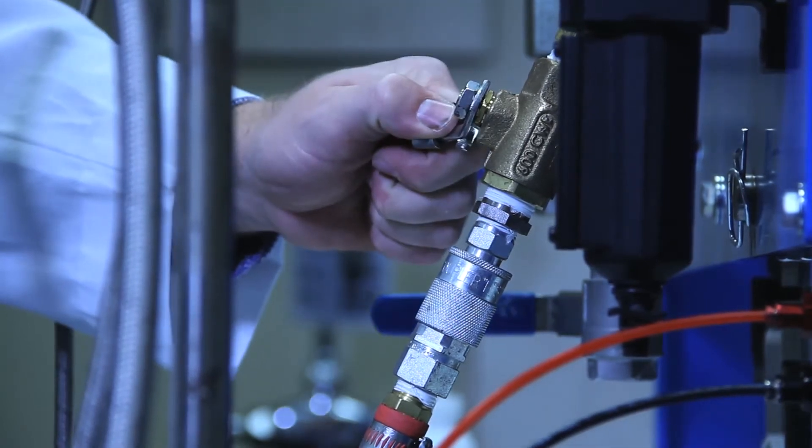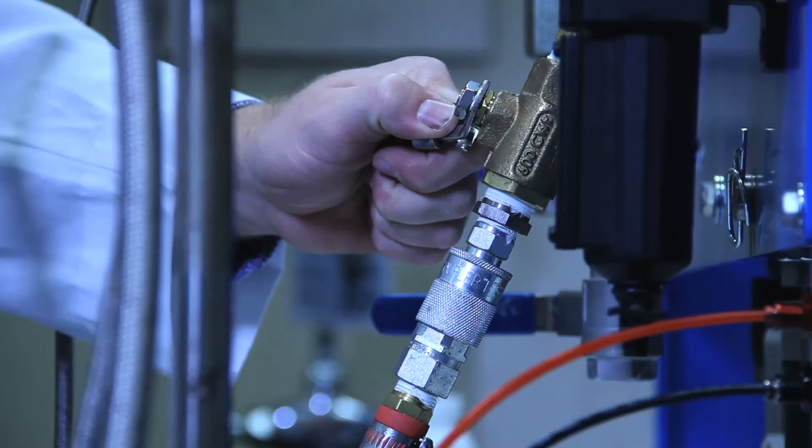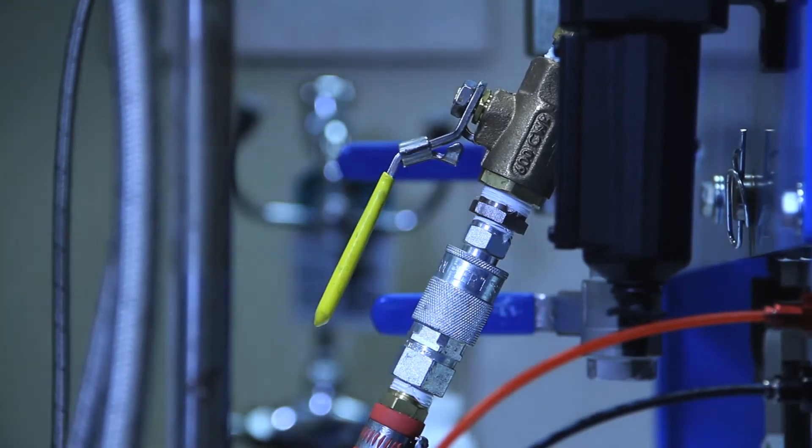If the valve is only partially open, it will bleed all air pressure to prevent the mixer from running. You will hear a loud hissing noise if the valve is not in the correct position.